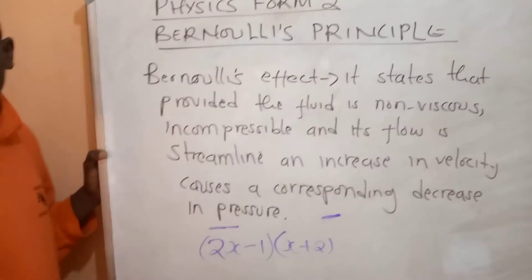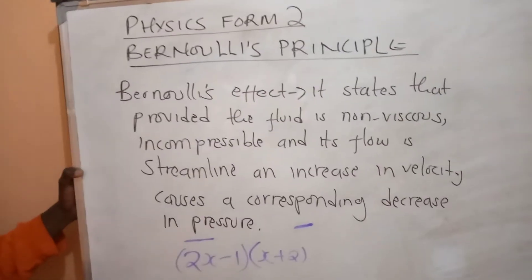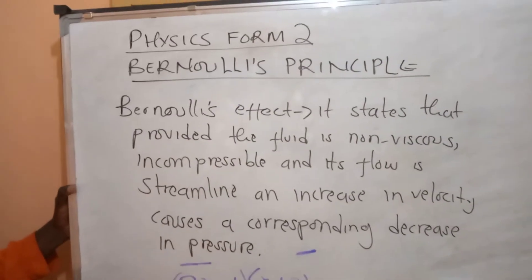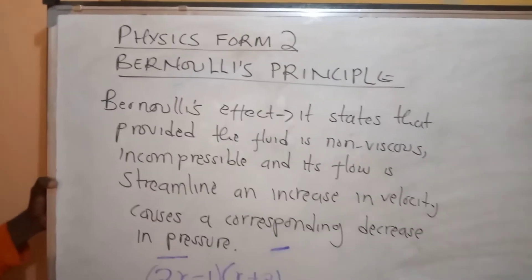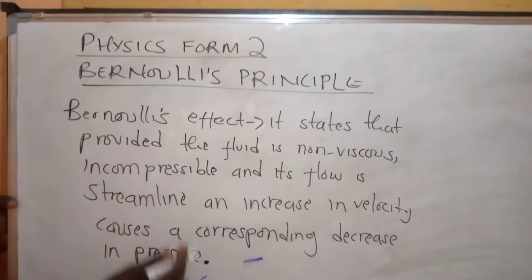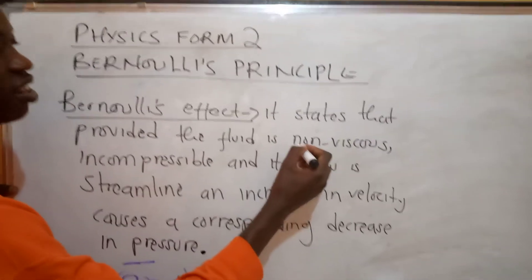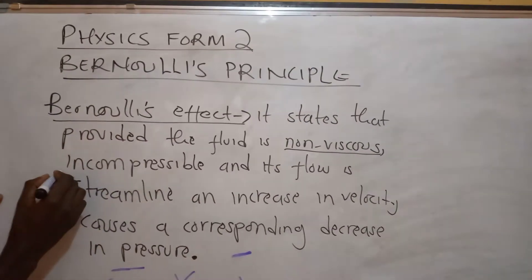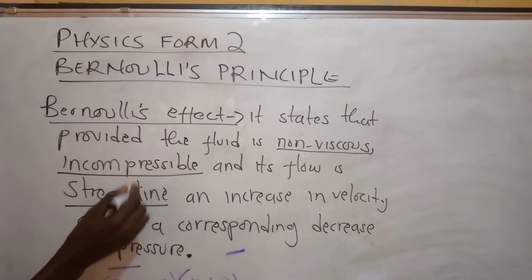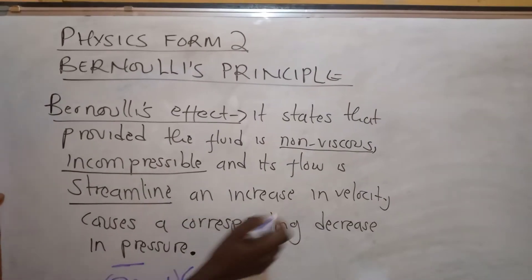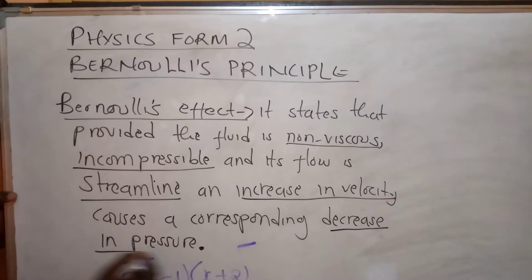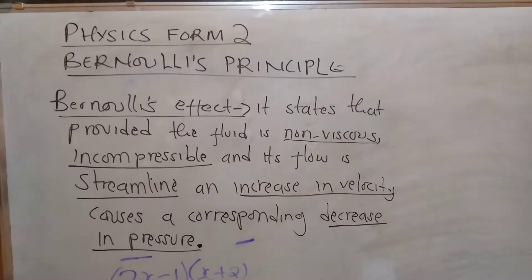From Bernoulli's effect, we get the three assumptions: the fluid should be non-viscous, it should be incompressible, and the flow should be streamlined. Another name for streamlined flow is steady flow. Increasing velocity will cause a decrease in pressure. These are the keywords when stating Bernoulli's effect.